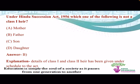Under Hindu Succession Act 1956, which one of the following is not a class 1 heir? You can refer to the schedule for this, which gives details of class 1 and class 2 heirs. From the options — mother, father, son and daughter — father lies in class 2 heirs. So the correct answer is B, father.